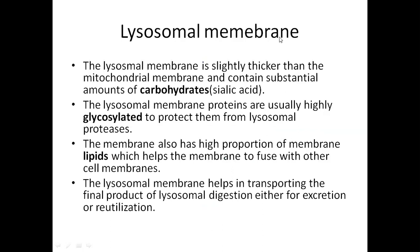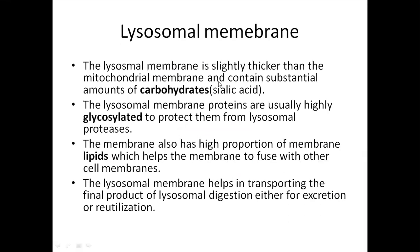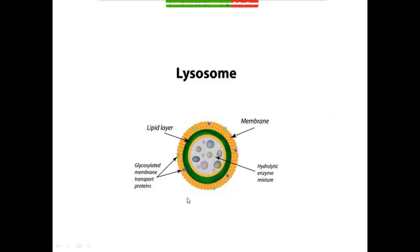The lysosomal membrane is a special kind of membrane because the environment inside the lumen is different, consisting of hydrolytic enzymes. This is why the lysosomal membrane is thicker than the mitochondrial membrane and contains a substantial amount of carbohydrates, especially sialic acid. The membrane is well glycosylated to protect itself from lysosomal proteases. Lipids present in the membrane are essential for the primary lysosome to fuse with other vesicles. The lysosomal membrane also has transporters for the final products of lysosomal digestion, supplying them either for excretion or re-utilization.